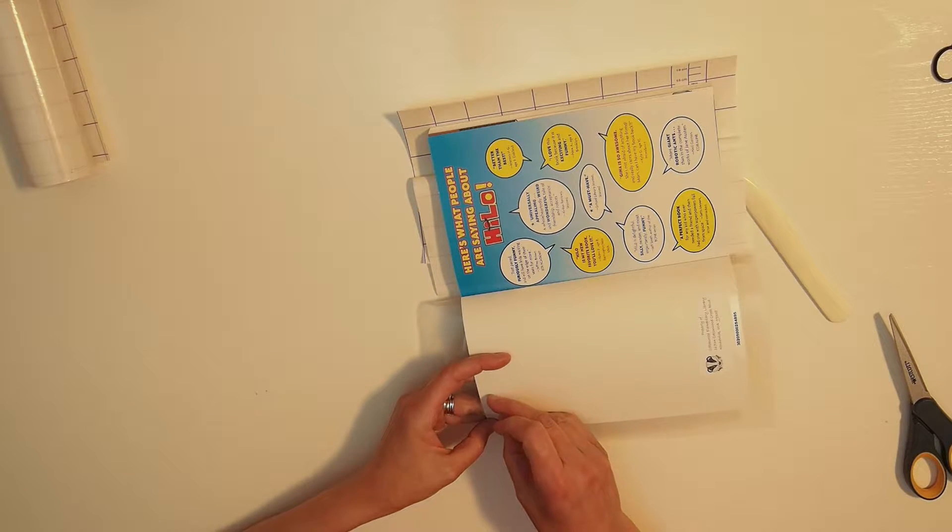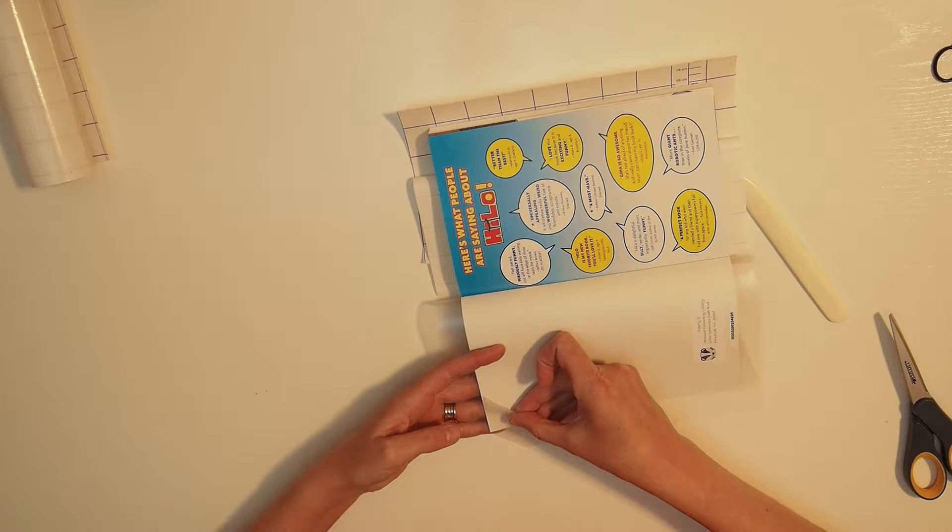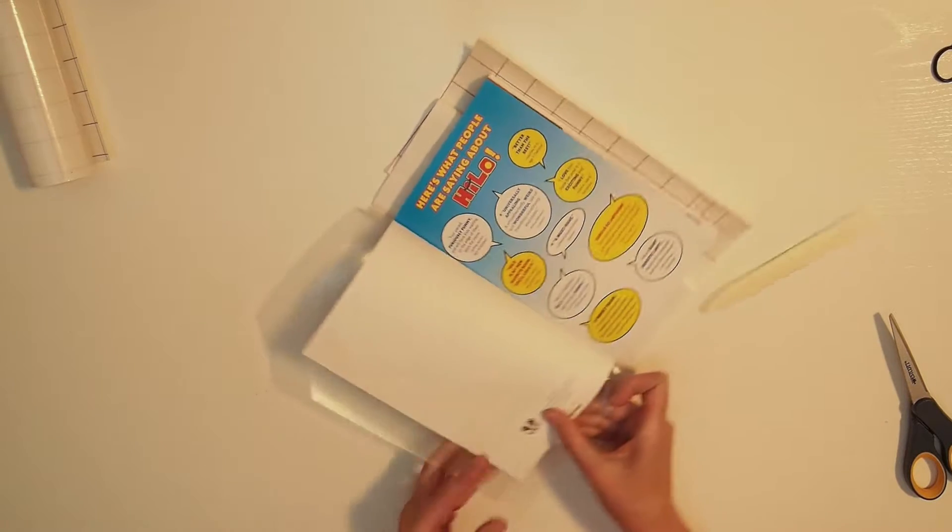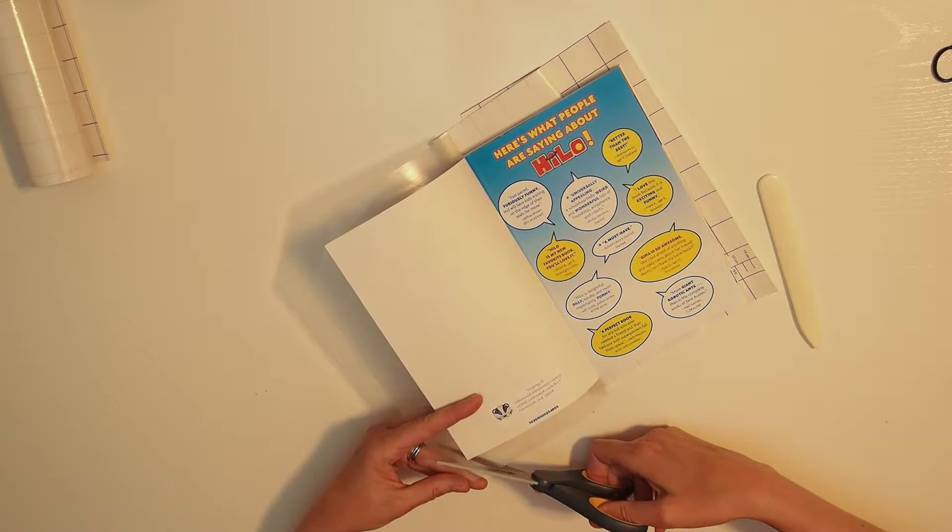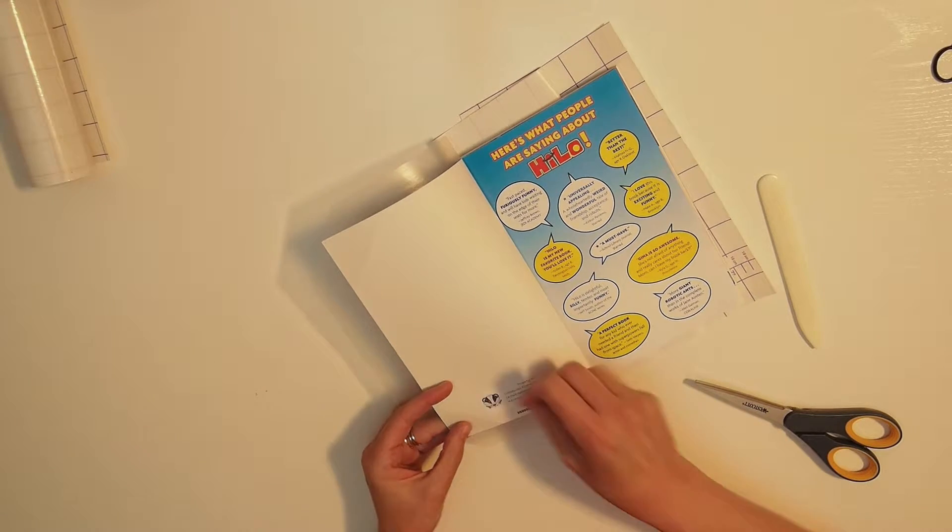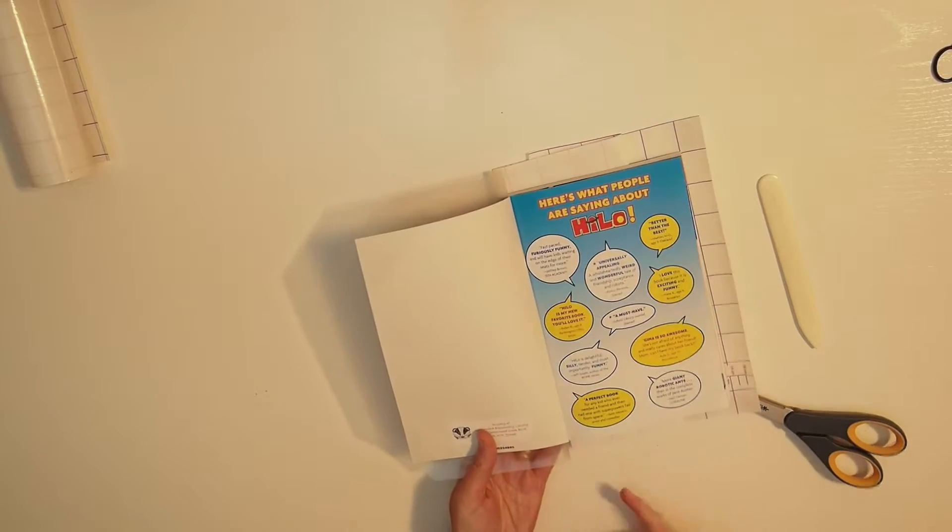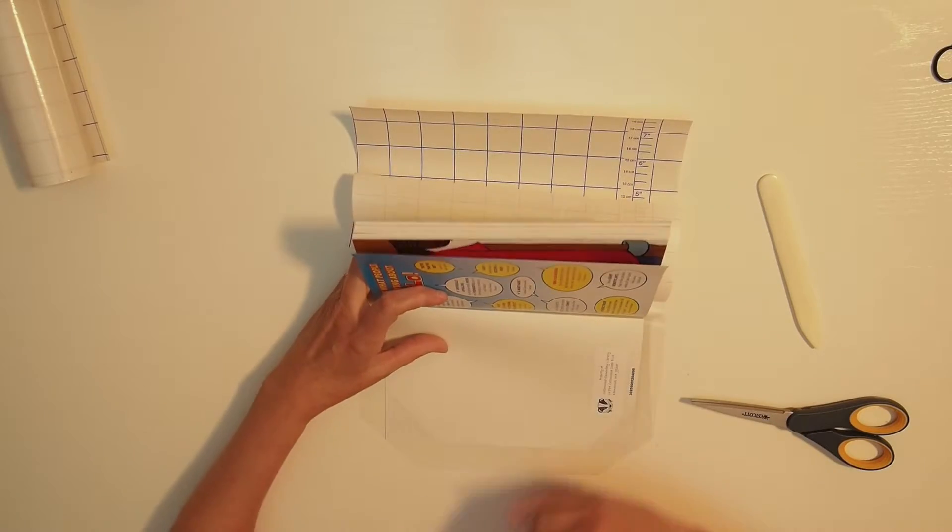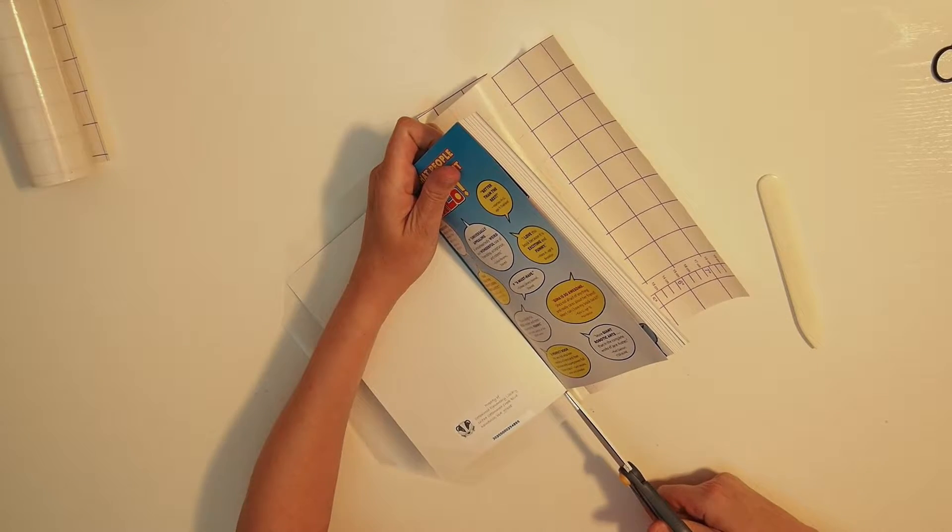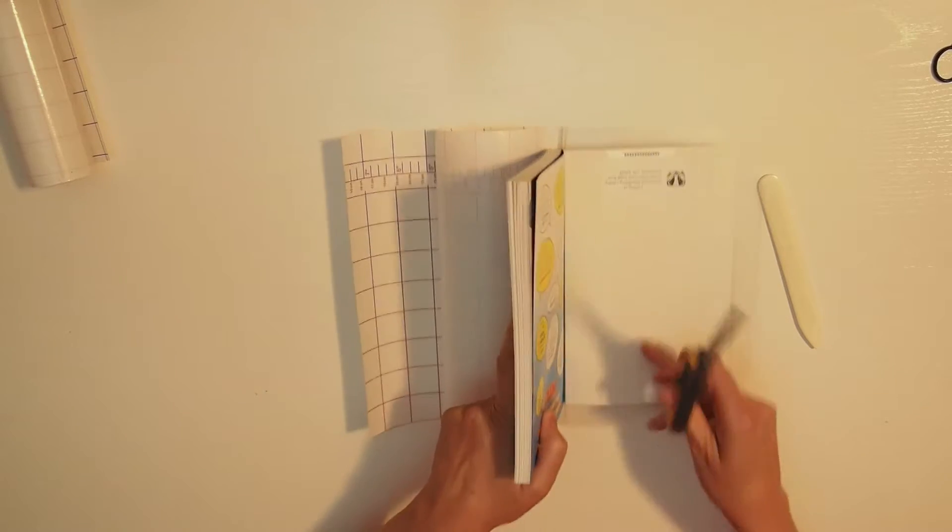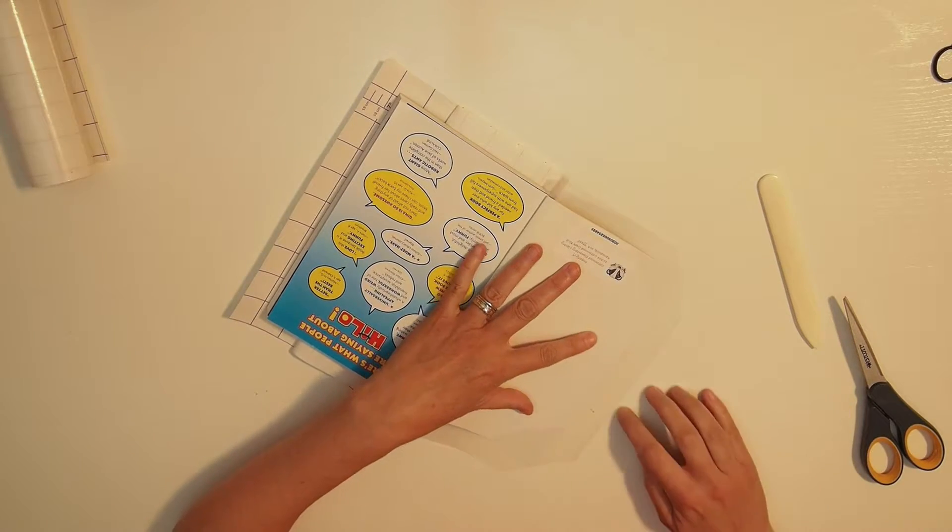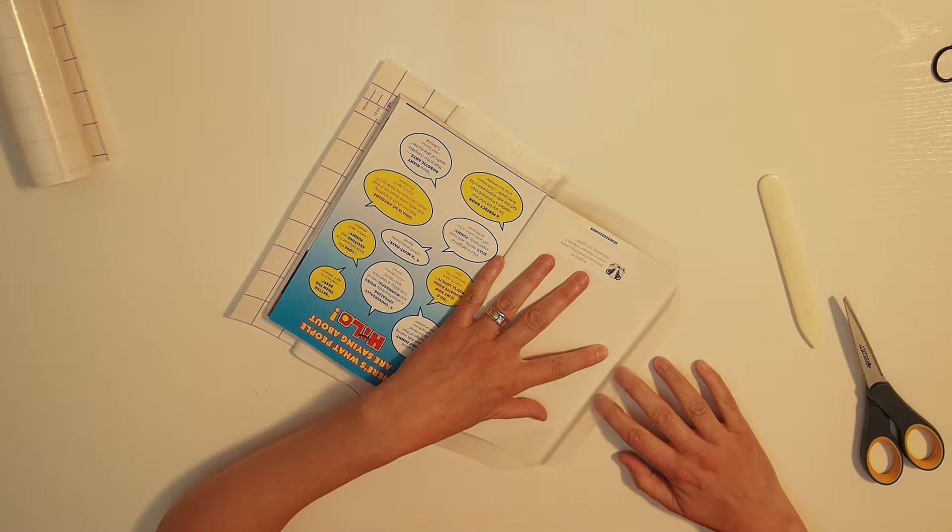This came off the edge a little bit and that will not be good when we need to fold the laminate over, so I'm going to reposition this. Place that there, and then now we're going to cut a slit in this laminate here so that we can fold all of these flaps in. So cut right there, just to the edge of the book, and there.